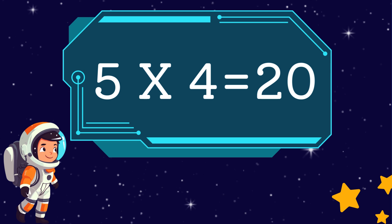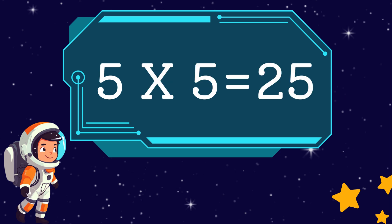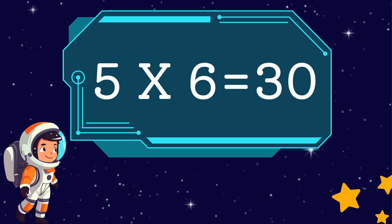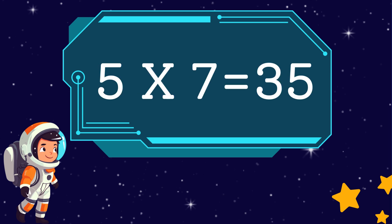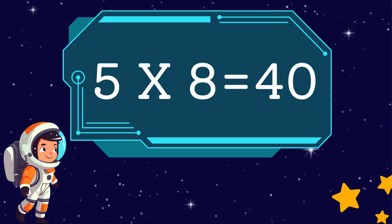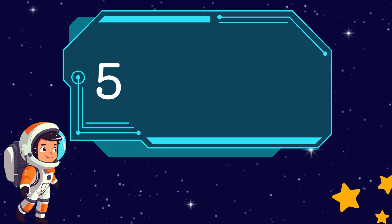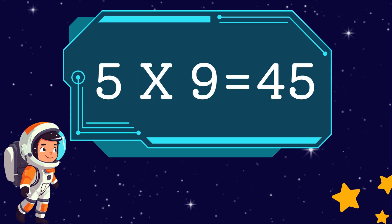Five fours are twenty. Five fives are twenty-five. Five sixes are thirty. Five sevens are thirty-five. Five eights are forty. Five nines are forty-five.